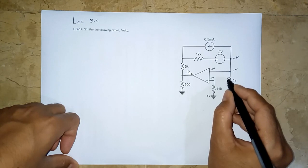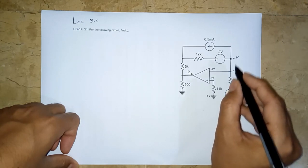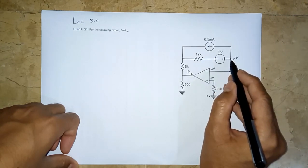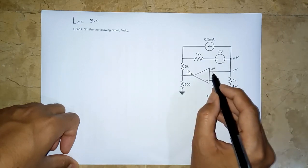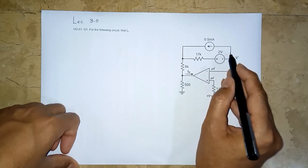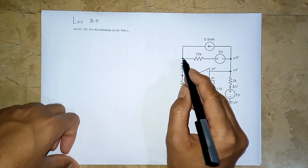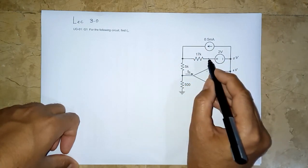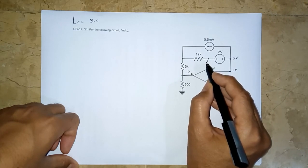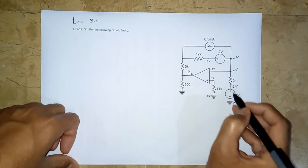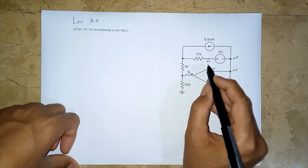So we have one volt here. We have zero volt here. We can very easily find this current. And we have zero volt here, and we know a current of 0.5 milliampere is flowing in here. We have zero volt here. We have two volt here based on the same logic.